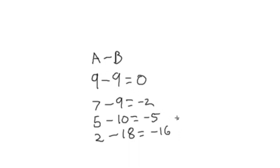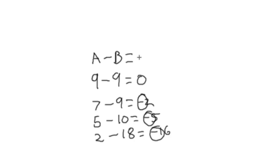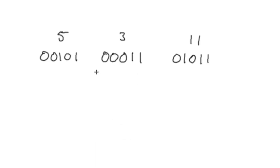You're never going to get a constant number when A is less than B. But what you are going to get that's constant is the fact that the number is negative. So if you can test to see if the result of A minus B is a negative number, then you can determine that A is in fact less than B.